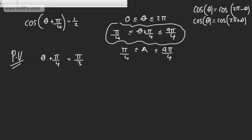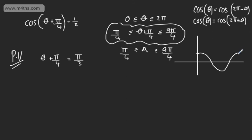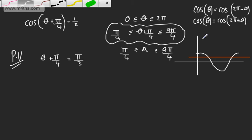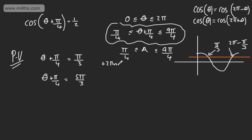Looking at this graphically with the standard cosine curve from 0 to 360 degrees: if I have the value one half, we get a solution at pi by 3, and then one pi by 3 back from 2 pi — that's 2 pi minus pi by 3, or 5 pi by 3. Theta plus pi by 4 equals pi by 3, and the second solution theta plus pi by 4 equals 5 pi by 3. Subsequent solutions are 2 pi n on, going outside the interval.